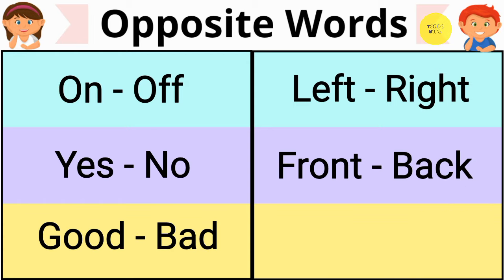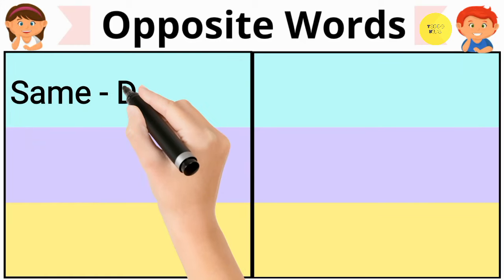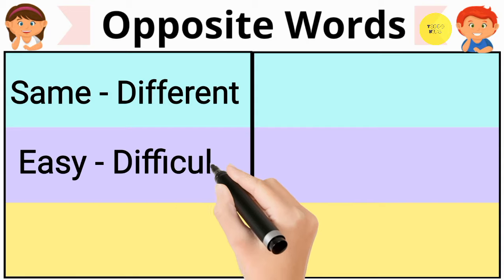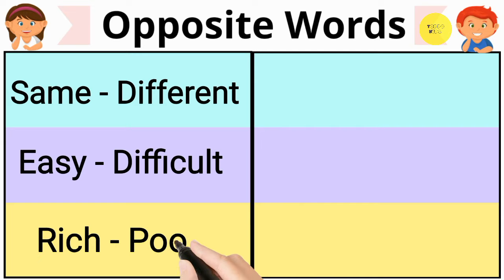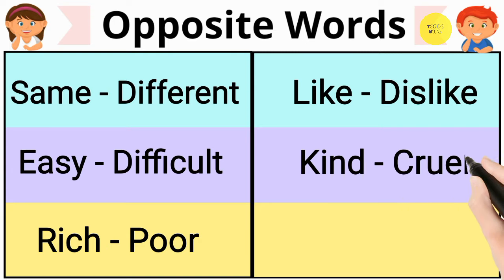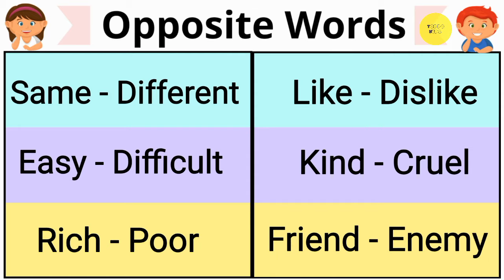Front, back. Cheap, expensive. Same, different. Easy, difficult. Rich, poor. Like, dislike. Kind, cruel. Friend, enemy.